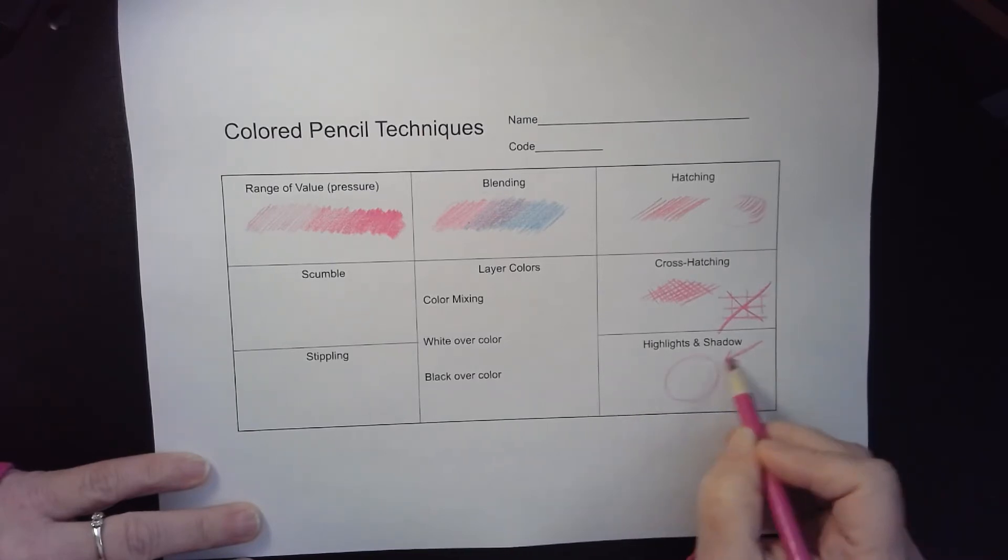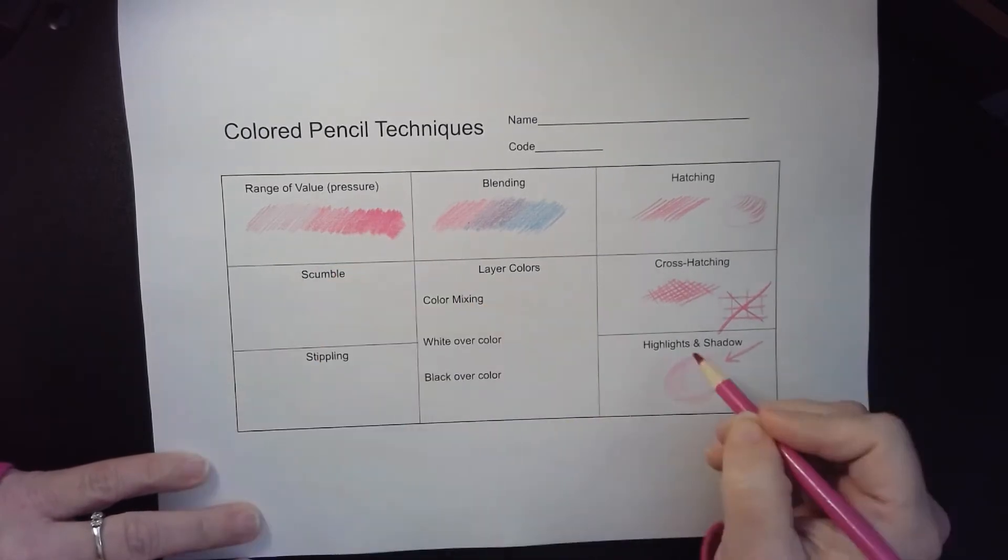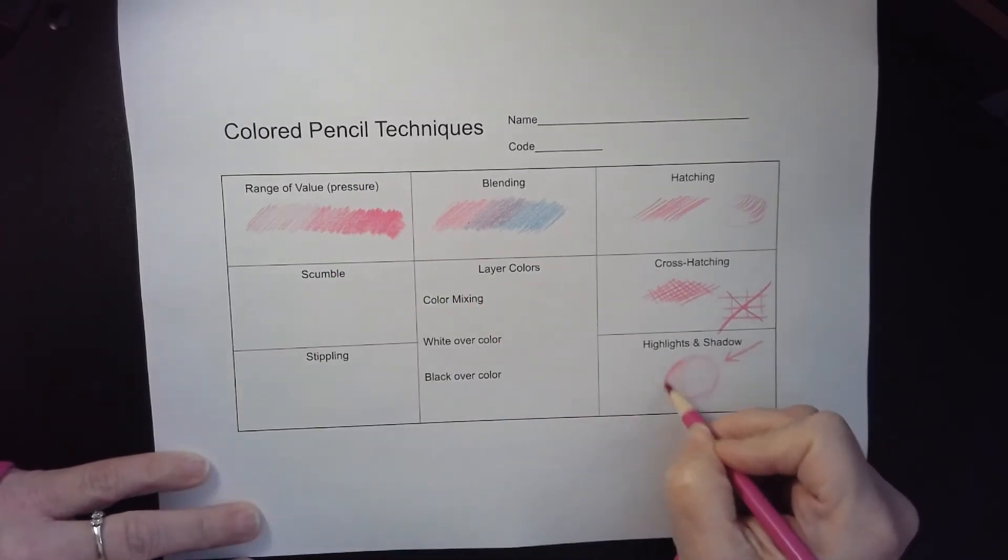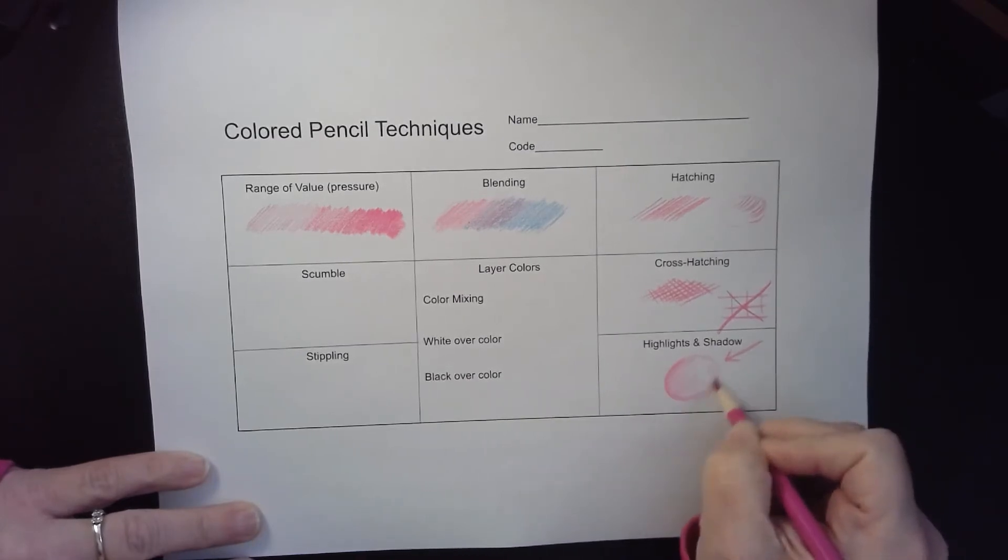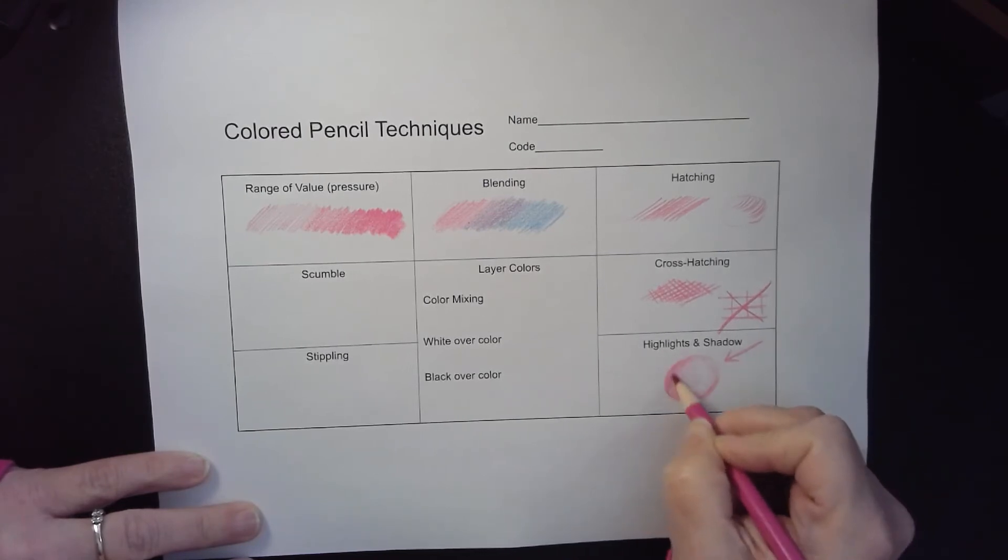And I am going to put some color here on the back like so, and I'm going to actually use a little bit of my range of value and get a little darker as I come across in the back and lighten up as I get closer and closer to my highlight. So this is creating some shading, some shadows that would be here on this sphere.